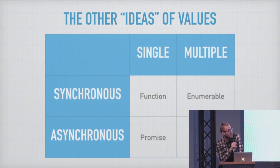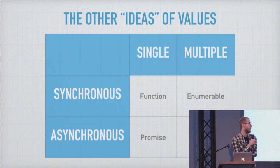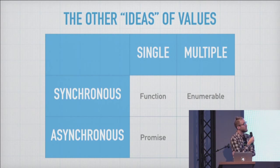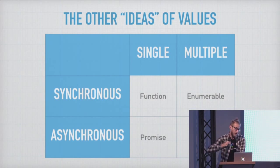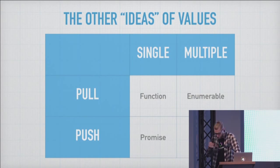So what does that mean? Let's take a look at some other ideas of future values. In the first quadrant we've got functions — it may seem strange to call a function an idea of a value, but ultimately that's kind of what it is. It's not the value yet; it produces a value whenever you want it to. Functions are synchronous. An enumerable can synchronously give you back multiple values. A promise can asynchronously give you back a single value. And then an observable is something that can asynchronously give you back multiple values.